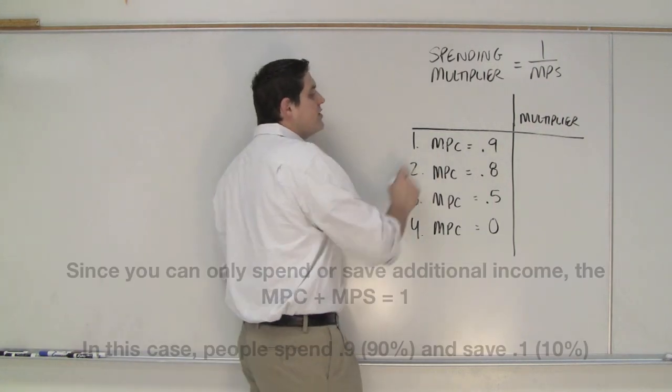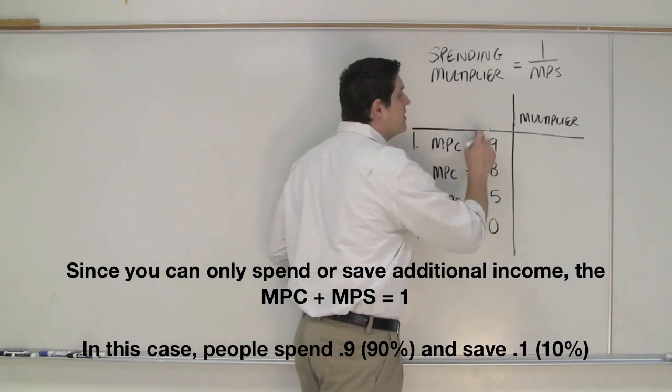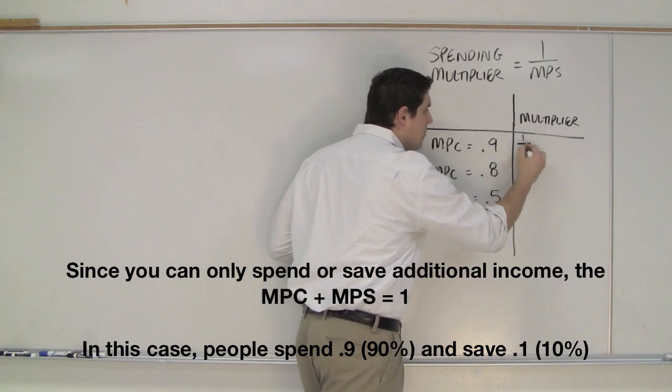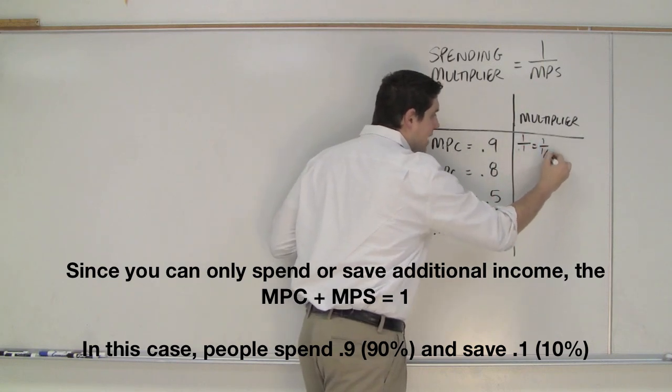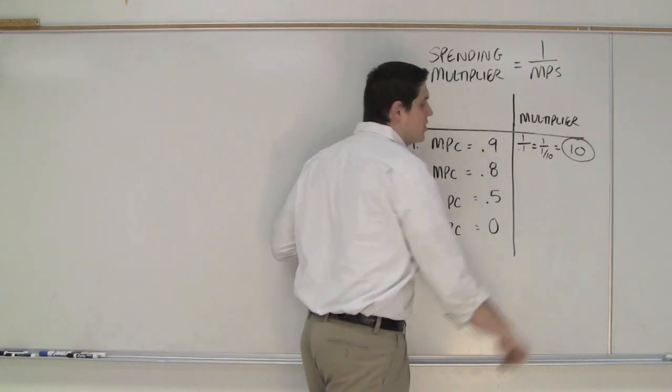Let's figure it out. The marginal propensity to consume is 0.9. That means the marginal propensity to save is 0.1. So, 1 over 0.1, which is 1 over 1 tenth. The multiplier will be 10. There's your answer, 10.